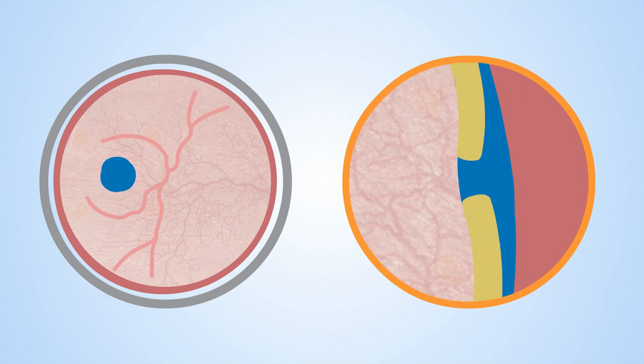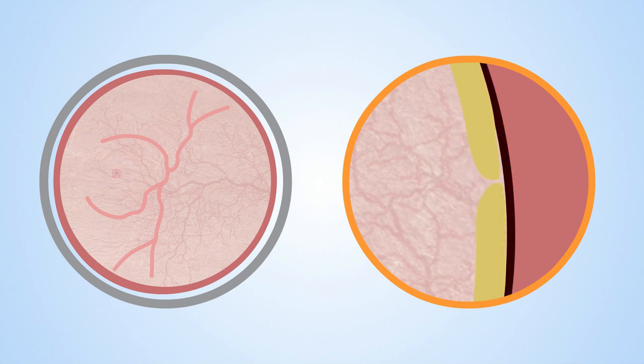The retracted retina around the macular hole is now detached from the RPE. The elastic retina is now mobile and can shift and cover the anatomical area of the fovea again.